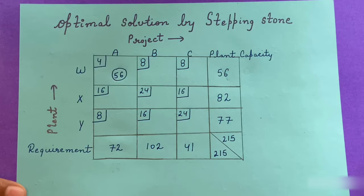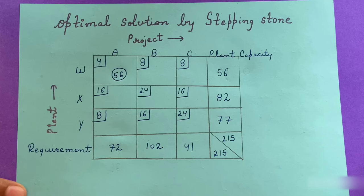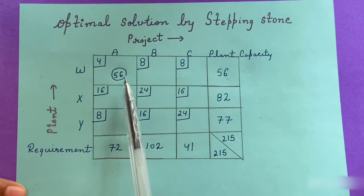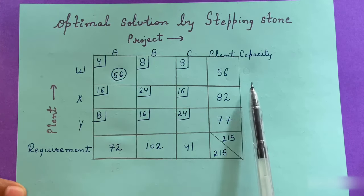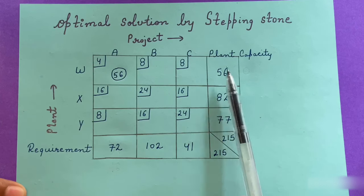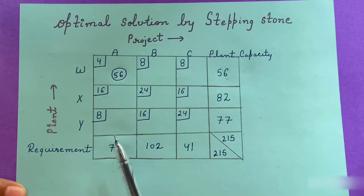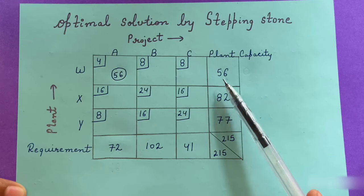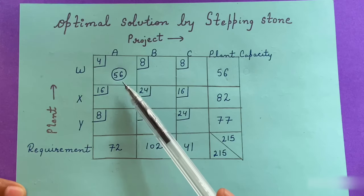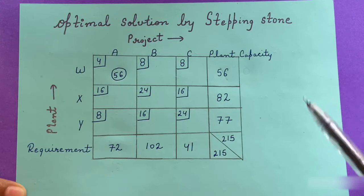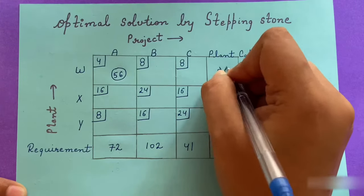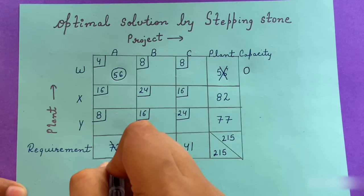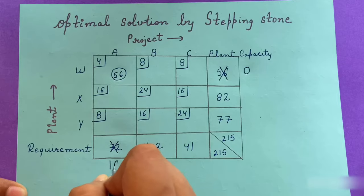In the northwest corner method, as the name suggests, we start from the northwest corner. In this matrix, the northwest corner has a plant capacity of 56 units and a requirement of 72 units. The minimum of 56 and 72 is 56, so we supply 56 units here. The plant capacity changes to 0 and the requirement changes to 16 units.